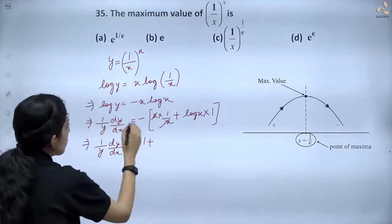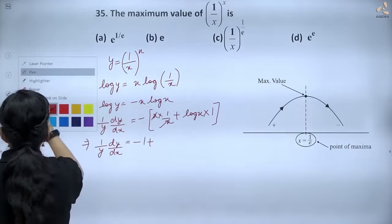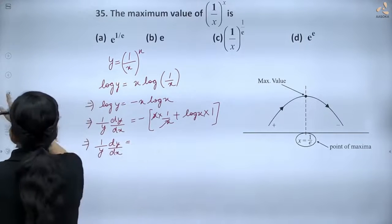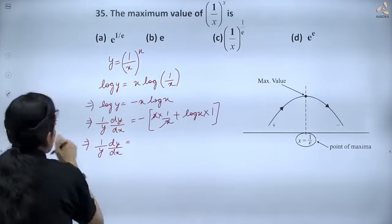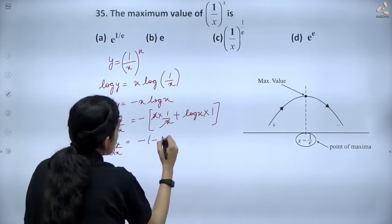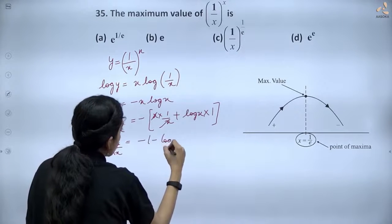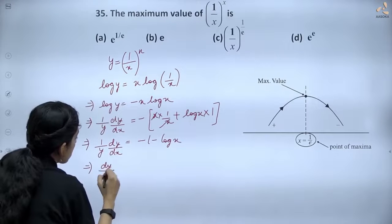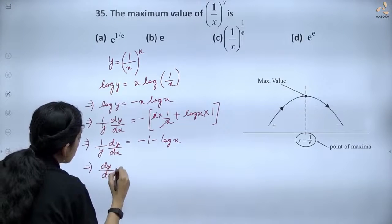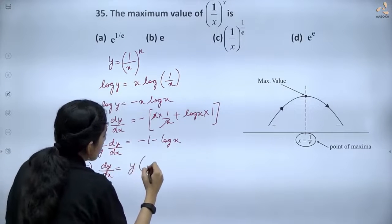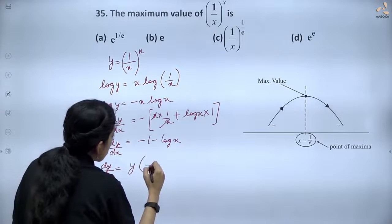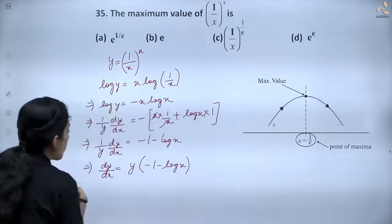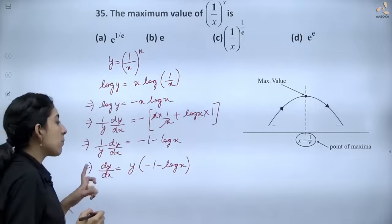So we have 1/y · dy/dx = -1 - log x. Therefore, dy/dx = y · (-1 - log x).